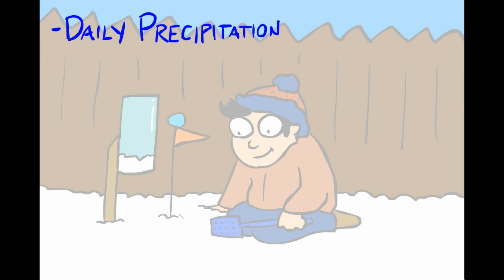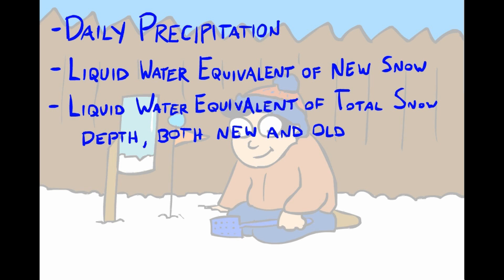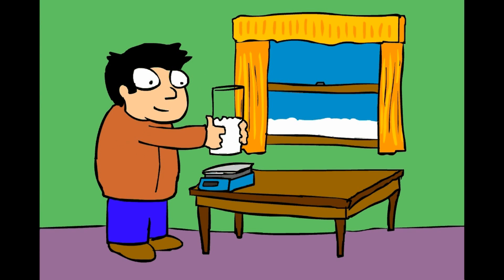When taking measurements for daily precipitation, liquid water equivalent of new snow, or the liquid water equivalent of the total snow depth, both new and old snow, you have the option to weigh your measurement to figure out the correct liquid depth.